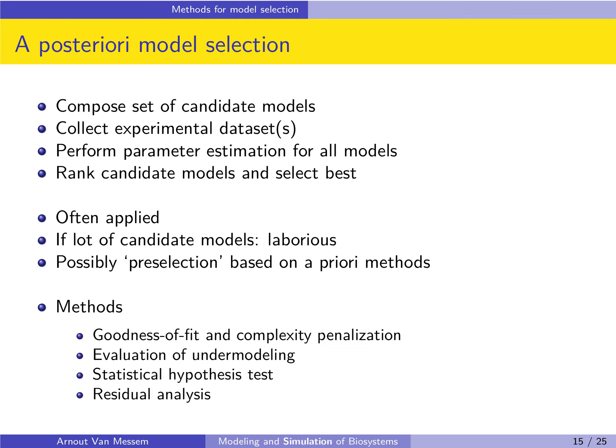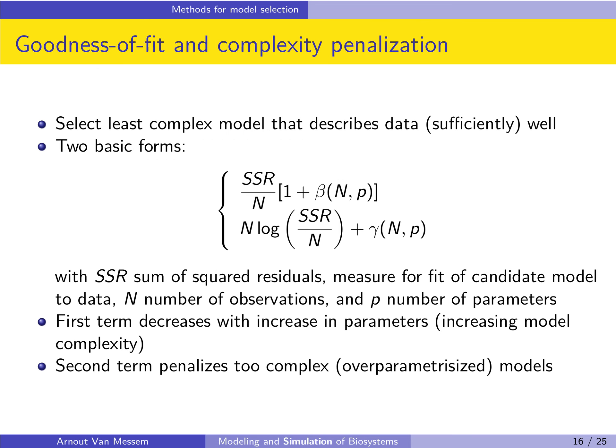In the following slides we will consider four methods for a posteriori model selection: first, goodness of fit and complexity penalization; then, evaluation of under-modeling; third, model selection using a statistical hypothesis test; and finally, residual analysis to select an optimal model.